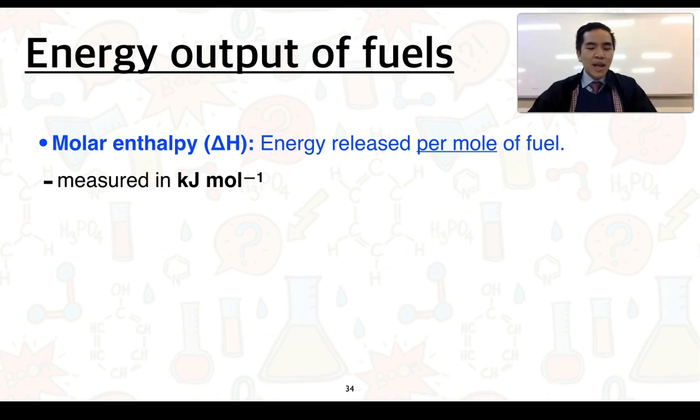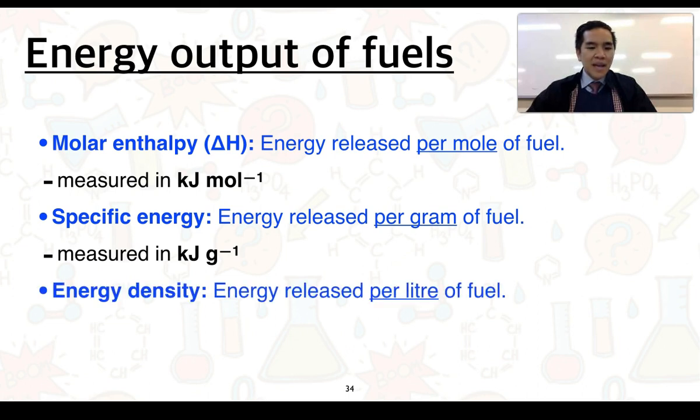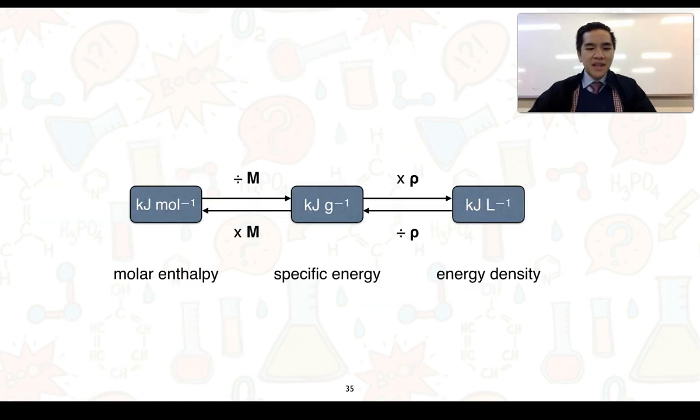We can compare energy output in a number of different ways. The next way is what we call the specific energy, which is the energy released per gram of fuel undergoing combustion, measured in kilojoules per gram. Also the energy density, which is the energy release per liter of fuel, measured in kilojoules per liter. One thing to factor in when trying to work out the energy density is that we actually need to know the density of the fuel itself.